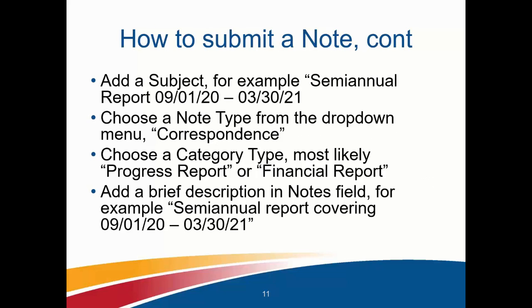Add the subject — for example, if it's a semi-annual report, you can rewrite the reporting dates or timeframes. Choose a note type from the drop-down menu, such as correspondence or whatever that particular note requires. Choose a category type — most likely it will be a progress report or a financial report, or additional documents required by the project officer or grants management specialist. Add a brief description in the note field, such as semi-annual reporting covering the relevant timeframe, or the SF-425 as related to your financial requirements.